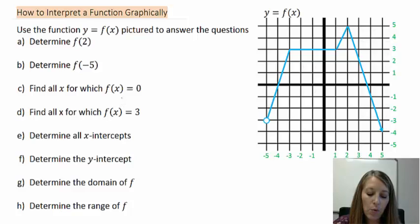So in part a and b, we want to determine f of a value. In part c and d, we want to figure out our x value such that our output is 0 and 3. X intercepts and y intercepts, that's a review from before. And domain and range is a review of this section. So I suggest that you pause the video and see if you can come up with these answers.